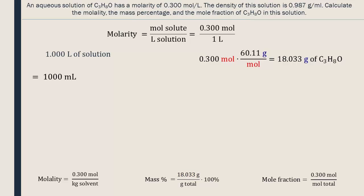By converting our volume from liters to milliliters, we can then multiply it by the density to find the total mass of the solution. We can insert this value into the mass percentage equation.